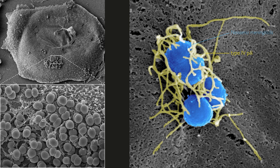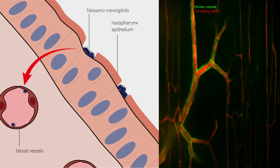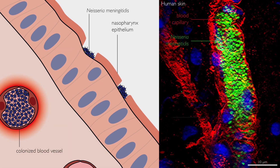Bacteria firmly attach to the epithelial cells that cover the nasopharynx through their pili. Then they form tight aggregates on the cellular surface. Problems start when they cross the epithelium and reach the bloodstream, because they can stick to the endothelium, start to proliferate, and form clusters that eventually fill capillaries in only a few hours.